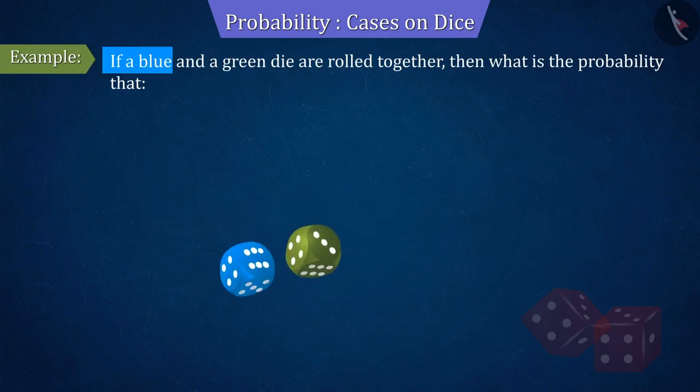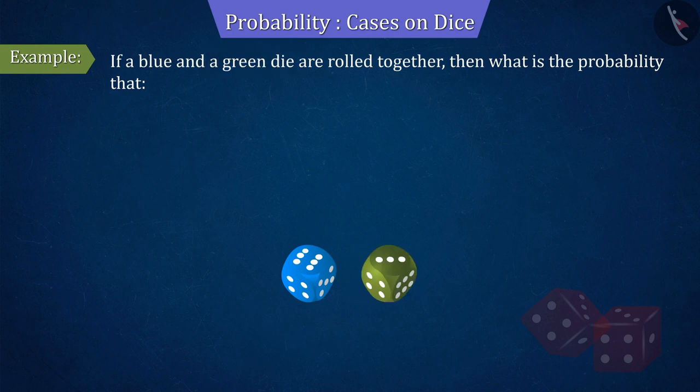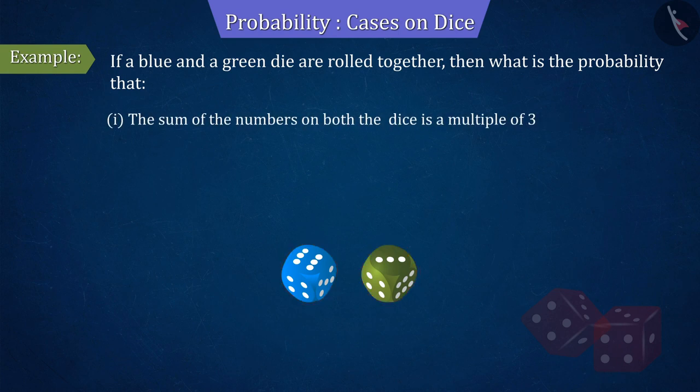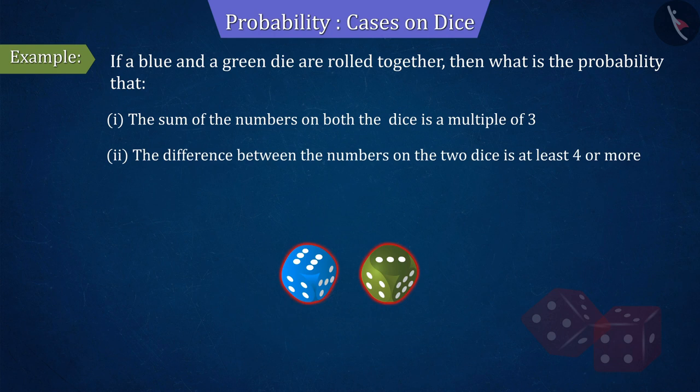If a green and blue die are rolled together, then what is the probability that the sum of the numbers on both the dice is a multiple of 3? And the difference between the numbers on the two dice is at least 4 or more? Let's see.